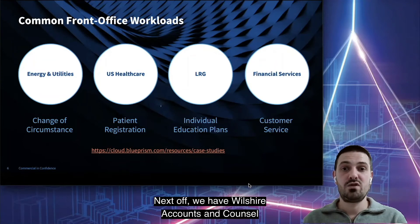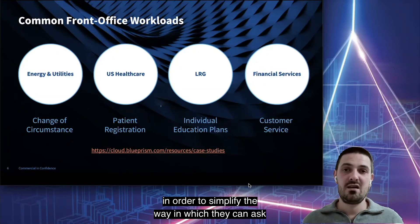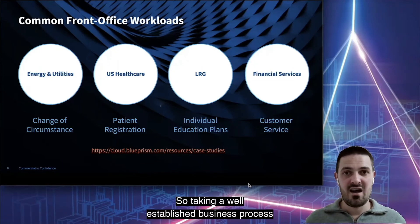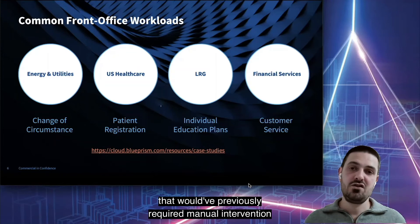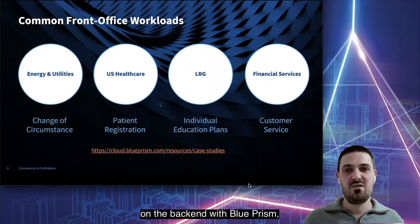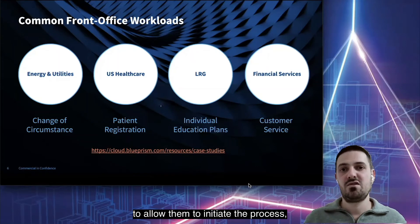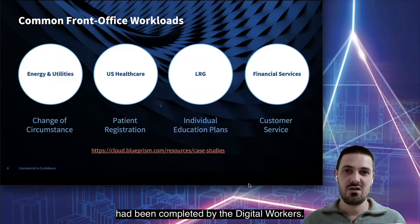Next we have Wiltshire County Council, who are able to work with their utility providers in order to simplify the way in which they can request temporary traffic signals. Taking a well-established business process that would have previously required manual intervention, they could not only automate the process on the back end with Blue Prism, but also extend an easy-to-consume interface out to their utility partners to initiate the process, as well as have information provided back to them once the activity had been completed by the digital workers.